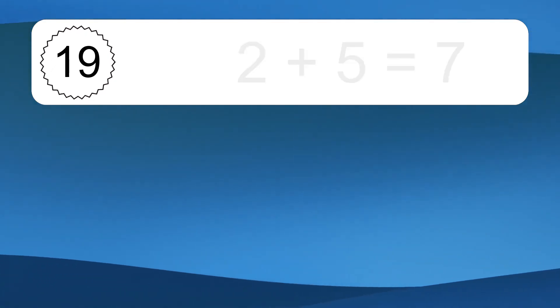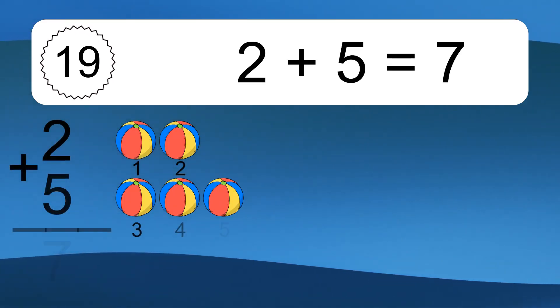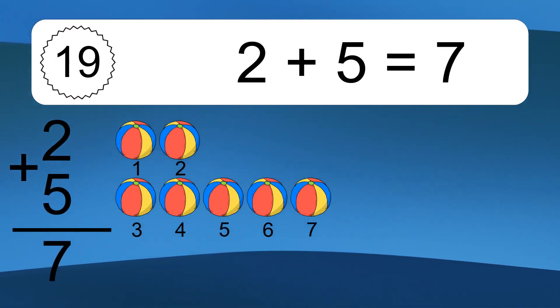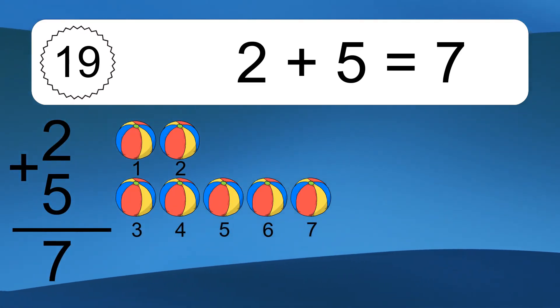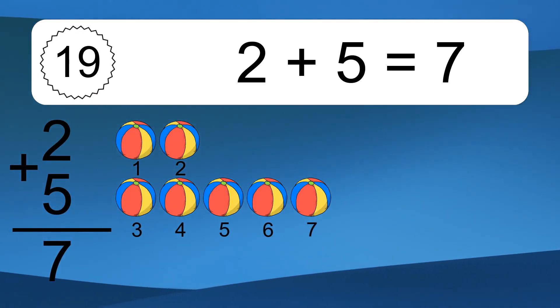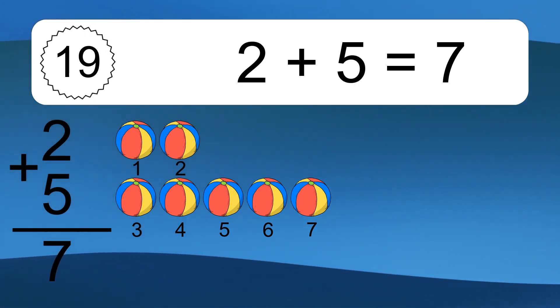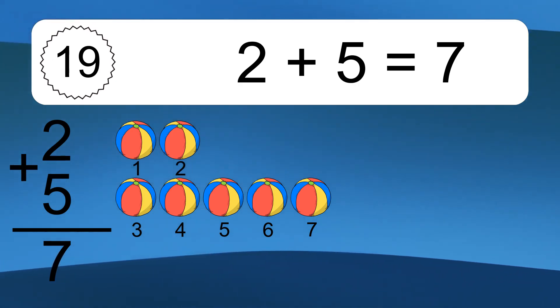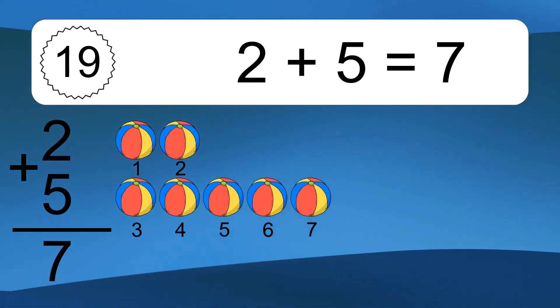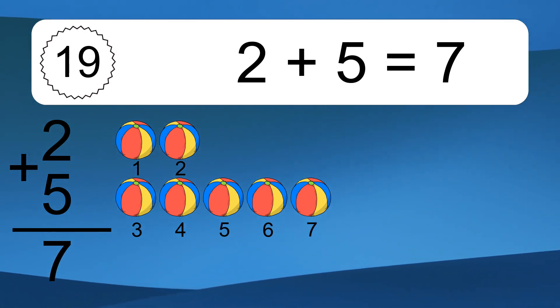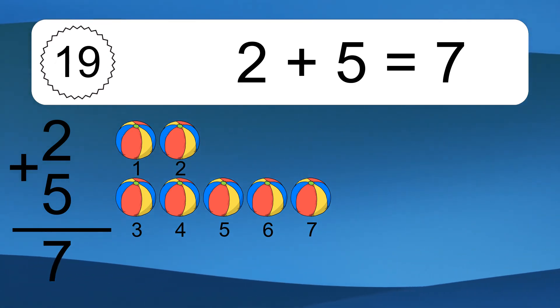2 plus 5 equals what? 2 plus 5 equals 7. Let's count it. 1, 2, 3, 4, 5, 6, 7.